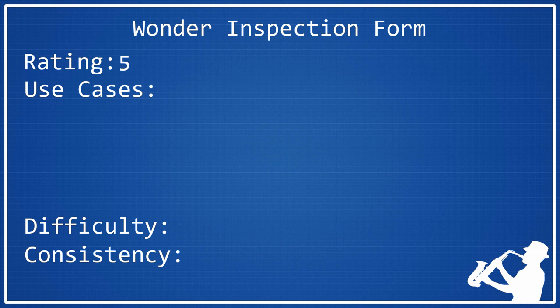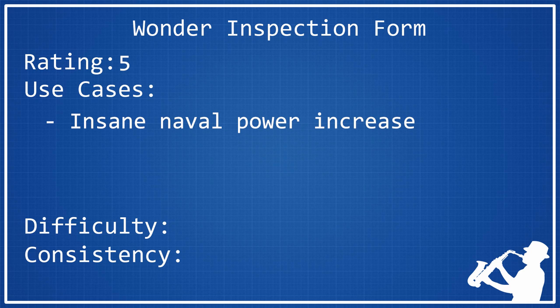The use case, obviously, is that if you want to get an insane naval power increase, you're going to build Venetian Arsenal. But the power increase you get from it is just absolutely ridiculous. You can spam out fleets and armadas so fast with Venetian Arsenal that it makes it so you can overpower pretty much anybody else in the game navally.